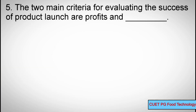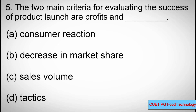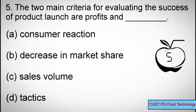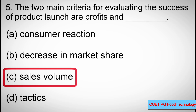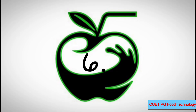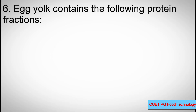Question number five: The two main criteria for evaluating the success of a product launch are profits and dash. Options: A) Consumer reaction, B) Decrease in market share, C) Sales volume, D) Tactics. Correct answer: C) Sales volume.